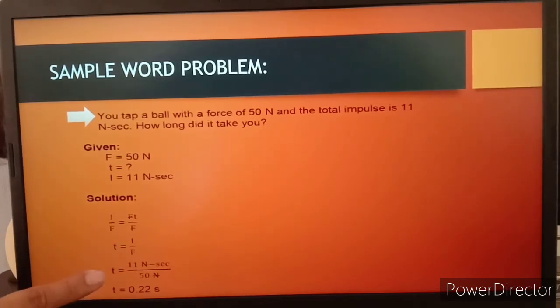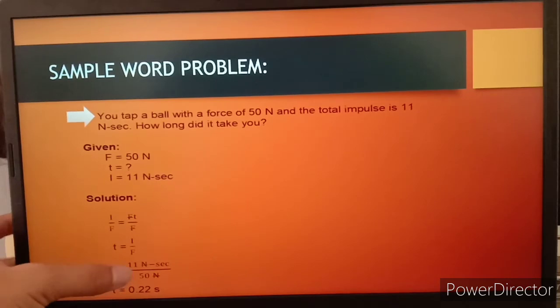We have here this derived formula, which is t = I/F. We need to substitute the given values. For the impulse, we have 11 newton seconds, and for the force, we have 50 newtons. Here is shown the cancellation of units, the newtons is the same unit.